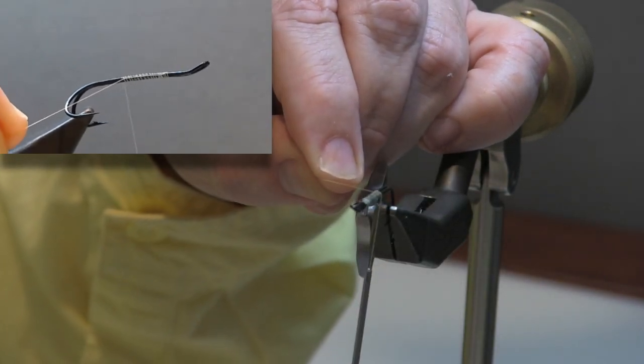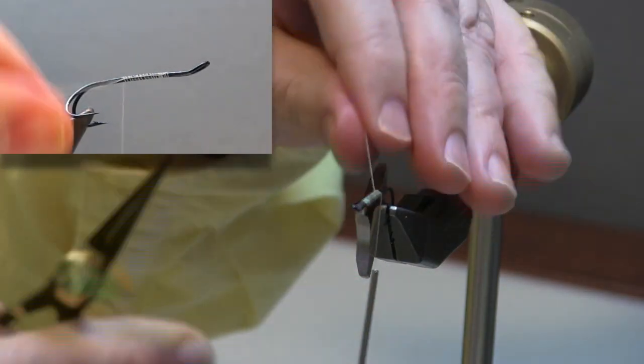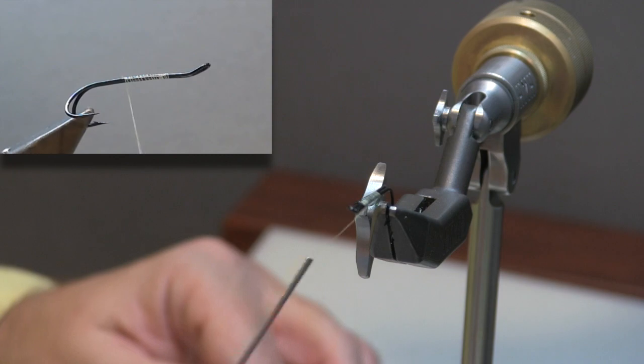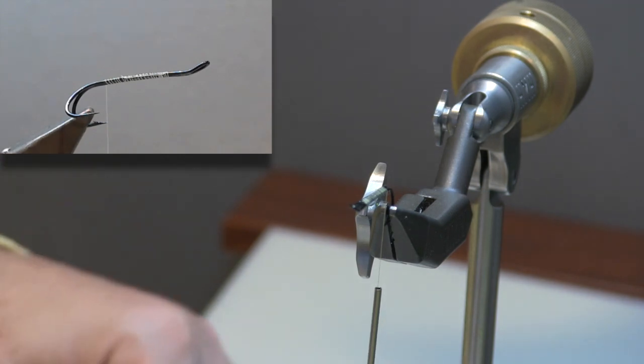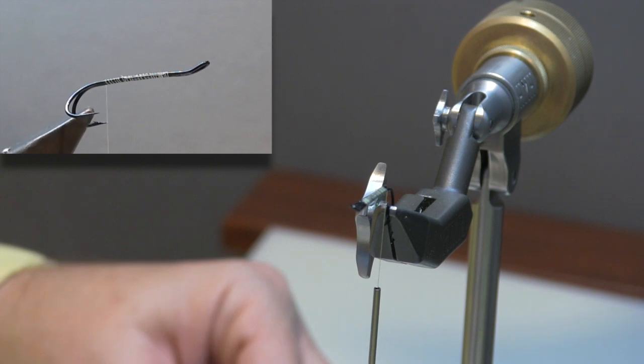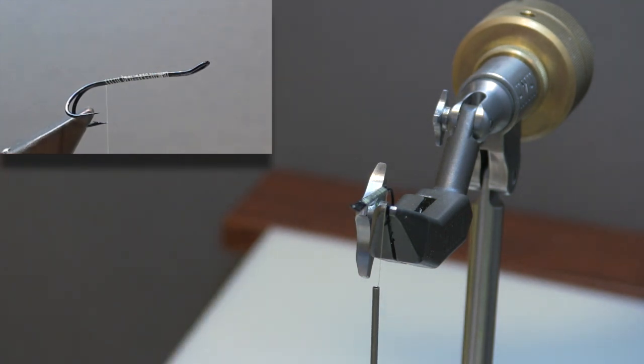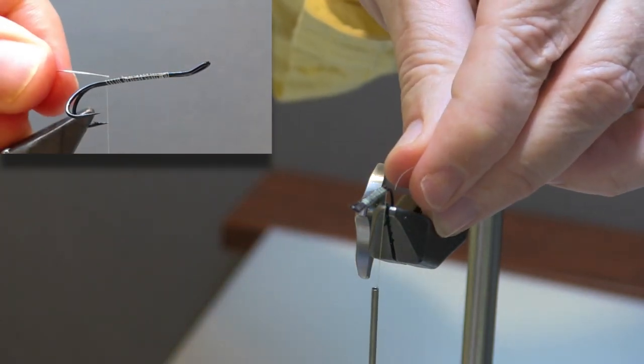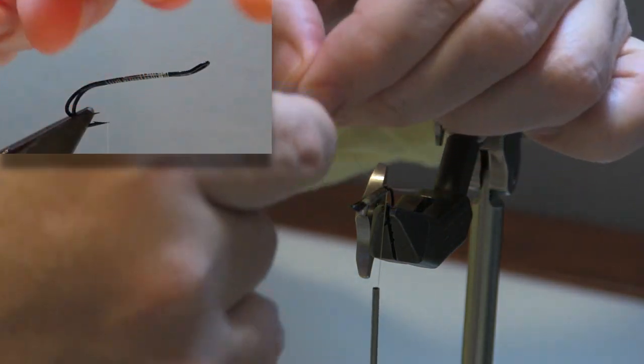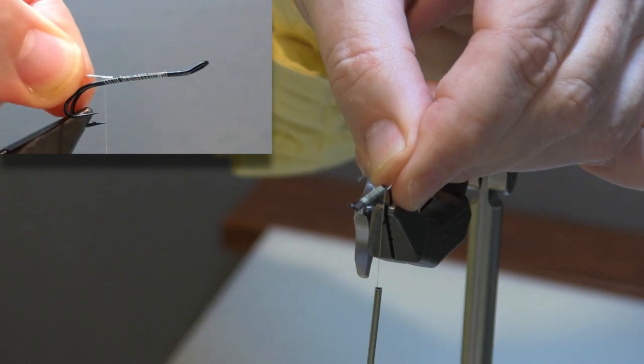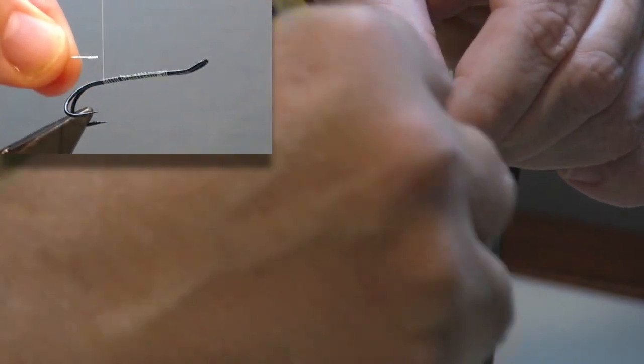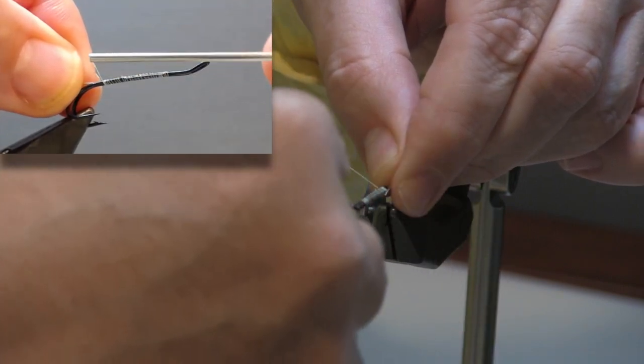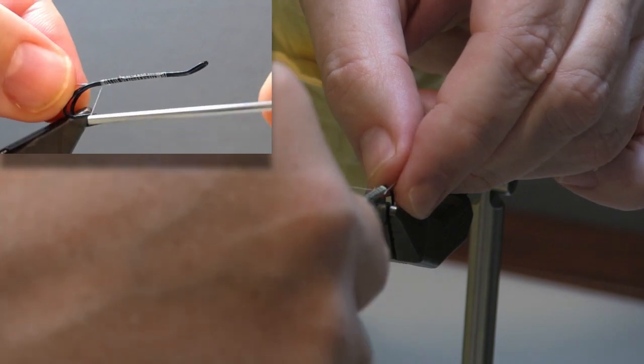I'm going to tie in and trim away that excess, using fairly open wraps. There's no need on a fishing fly like this to be super particular in terms of having perfect touching turns. The tip on this is a fine oval silver tinsel. When I tie this in, I'm going to strip away the silver on the last little bit so that I can tie in on that cloth core, because it's more secure than the silver itself.